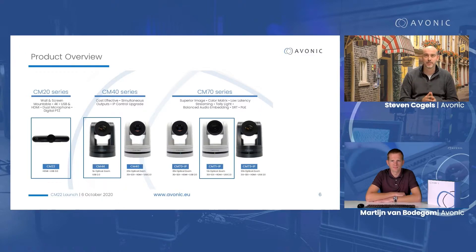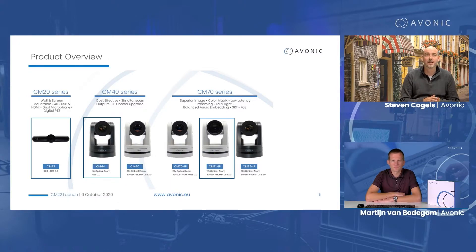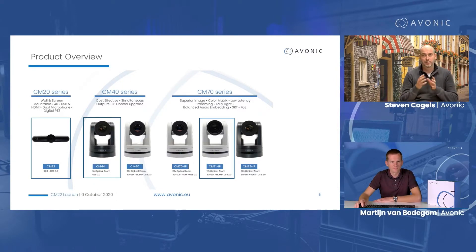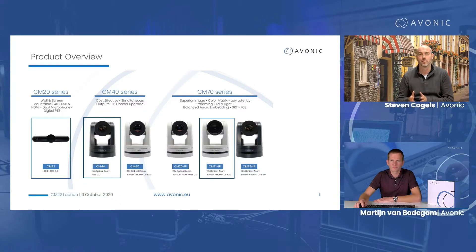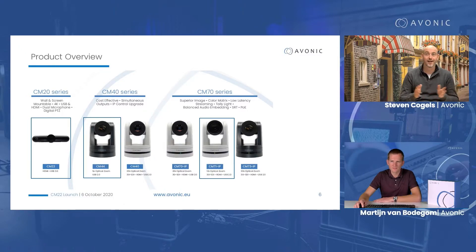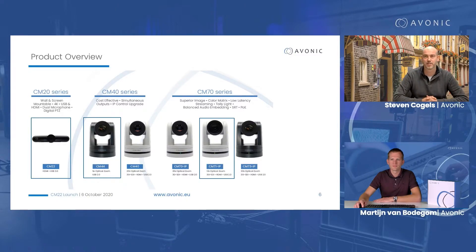Above that is the CM70 series. In the CM70 series, you've got all the features we have, including SRT, HDMI, SDI, IP streaming, PoE, IP control, low latency IP streaming, Tally Light, balanced audio embedding — the whole feature set you really need for demanding productions. The CM71, with a 12x zoom lens, is often used for video conferencing in bigger meeting rooms. All these products have a USB 2.0 output so you can use them for video conferencing, but these are the three most used in the projects we see.